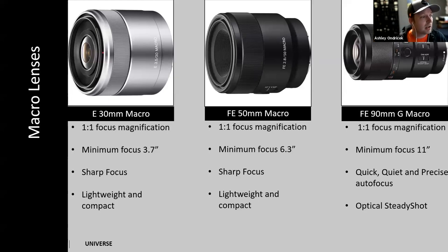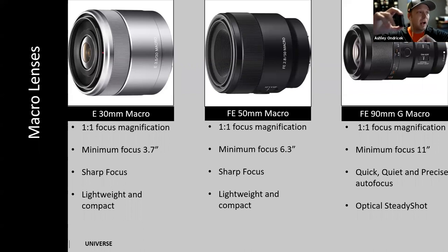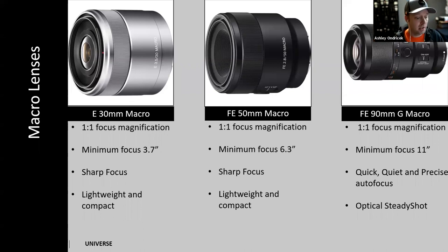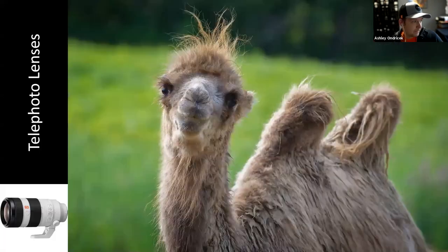The biggest difference between macro lenses is minimum focus distance - as focal length increases from 30mm to 50mm to 90mm, my working distance gets larger to achieve the same image. A 30mm macro puts me right on top of the subject; a 50mm gives a wider range; a 90mm even more so. If photographing butterflies or bugs, the 90mm is easier to work with because I can still get up close without being right on top of them and forcing them to run away.